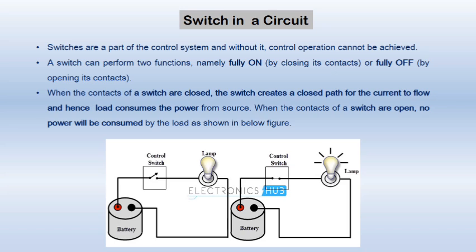Here we have connected a switch in the circuit. Switches are an important part of the control system and without it, control operation cannot be achieved. As you can see in this diagram, a switch is connecting this battery to the lamp, so it is acting as a control system here. If we keep the switch open, the lamp will not glow — it is controlling the flow of current towards the lamp. If we make the connection, the current from the battery source reaches the bulb and it glows. In this way, it controls the operation of a circuit.